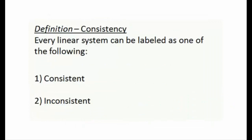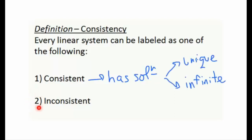The labeling does not stop there. There are two other words we commonly use: consistent and inconsistent. Consistent means the linear system has a solution, which can happen in one of two ways — either a unique solution or an infinite solution. Inconsistent means the linear system does not have a solution, so we only label a system inconsistent if it has no solution.